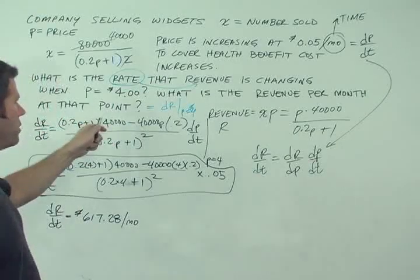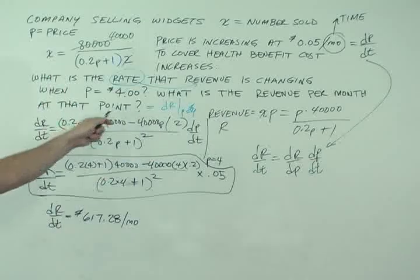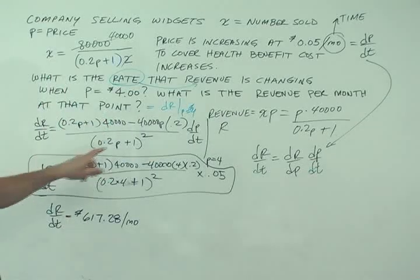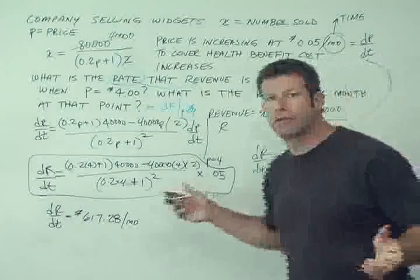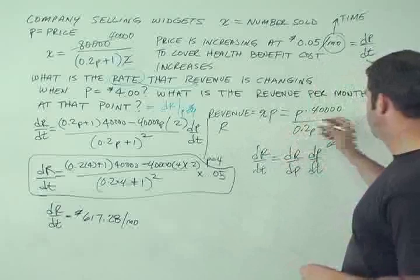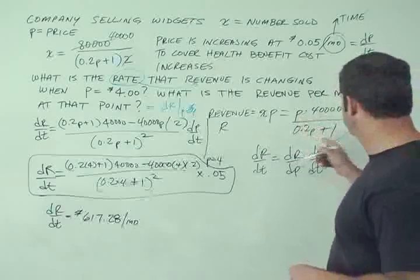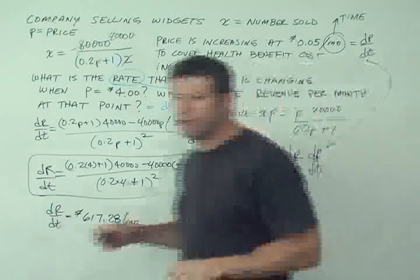Now the second part of the question is, what is the revenue per month at that point? Well, that's just going to be our formula for revenue, which involves no calculus whatsoever. We just put $4 in here for p. So I'm not even going to do that. You can do that yourself.